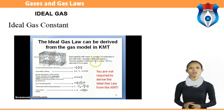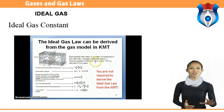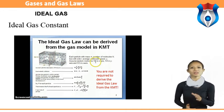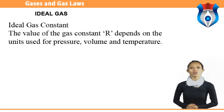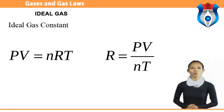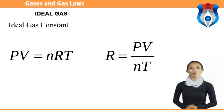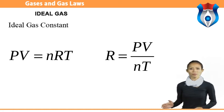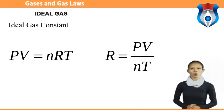Ideal gas constant: the gas constant R is a constant in the ideal gas law PV = nRT, where P is pressure, V is volume, n is number of moles, and T is temperature. The value of R depends on the units used: R = 0.0821 L·atm/mol·K; R = 8.3145 J/mol·K; R = 8.2057 × 10⁻⁵ m³·atm/mol·K; R = 62.3637 L·torr/mol·K.